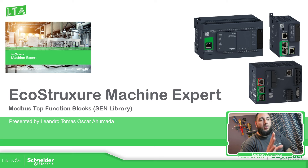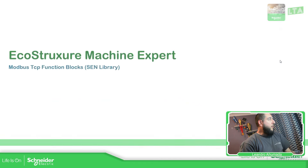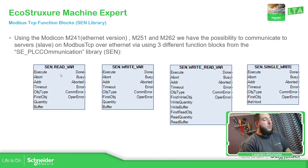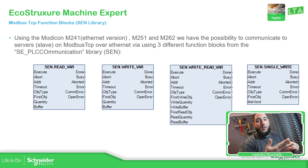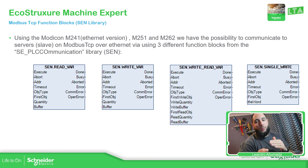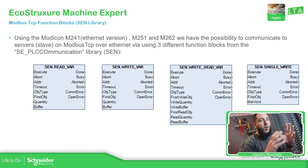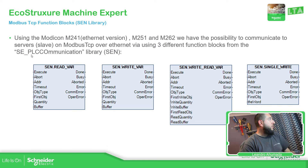In this particular case, I'm going to use the standard library function blocks. We actually have four function blocks: the read bar, write bar, read-write bar, and single write. Depending on which Modbus function you want to use in your PLC to communicate to a device, you will need to use these function blocks. All these function blocks are inside the standard library — the StandardDir underscore PLC communication. You can use SEN dot and then select the function block that you want.